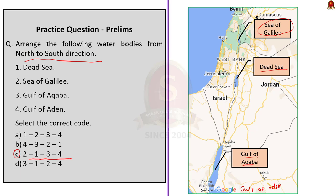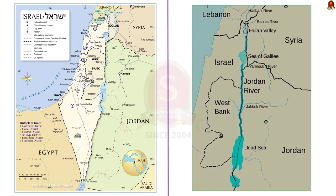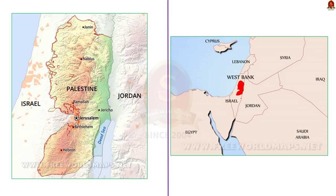This question was framed because recently the West Bank was in the news. The West Bank is located between Israel and Jordan. As the name suggests, it lies on the west bank of the River Jordan. It is bounded by Israel to the north, west and south, and Jordan lies to its east. It is located to the north of the Dead Sea. This territory belongs to Palestine.